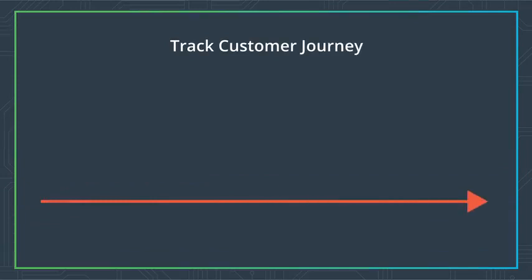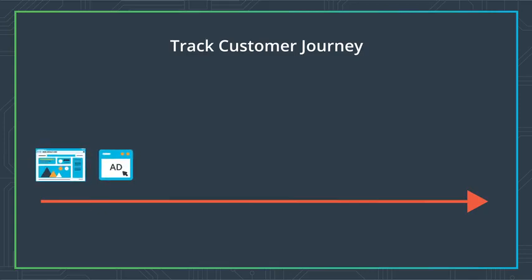Let's walk through the journey of WeCart, our hypothetical online app for grocery delivery. To track the customer's journey in the online space, you begin with identifying specific ad platforms such as search engines, Instagram, Twitter, Facebook, and many others.